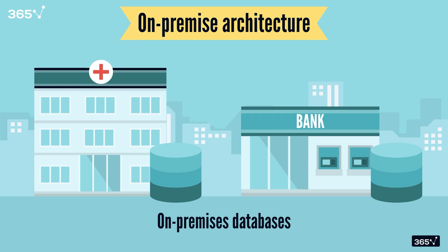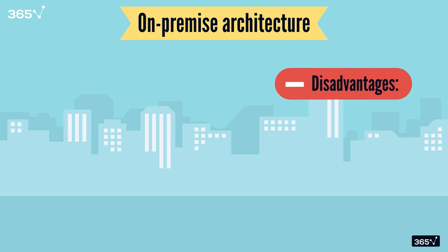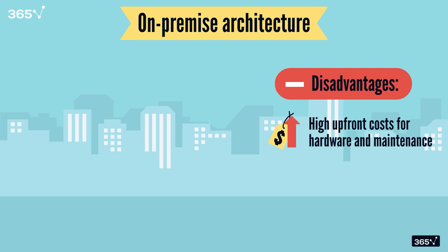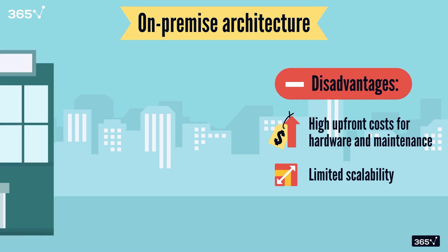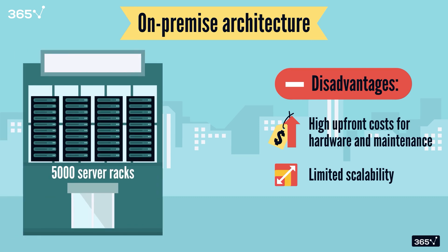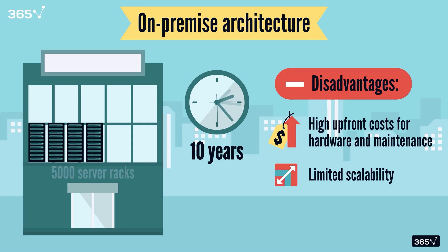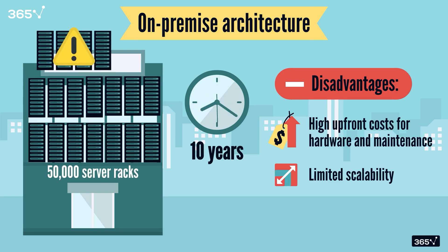Although more secure, on-premises systems come with their own challenges. To build a data center of your own, there are high upfront costs for hardware and maintenance. Scalability can be limited compared to the cloud — if you initially set up a data center of 5,000 server racks and in 10 years want to upgrade to 50,000 server racks, it will be nearly impossible without building a completely new data center.